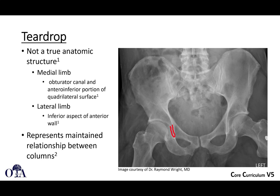The teardrop is a radiographic phenomenon, shown here in red. You cannot pick up a pelvis and identify the teardrop as a physical structure — it exists only on radiographs. The medial limb of the teardrop is formed by the obturator canal and the anterior inferior portion of the quadrilateral surface. The lateral limb is the inferior aspect of the anterior wall. The teardrop represents the maintained relationship between the two columns, and when it is disrupted it is often indicative of a disruption between the columns.